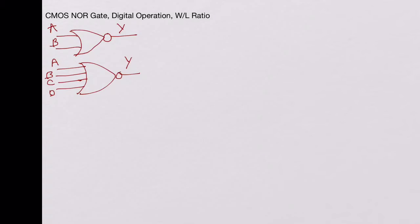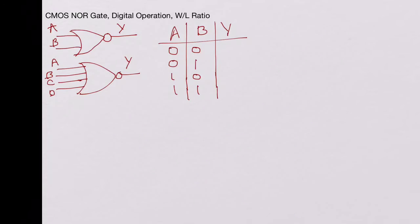Now let's look at the two input NOR gate and write the truth table for this. You'll have A and B and Y for the four different combinations of A and B. Y would be 0 0, 0 1, 1 0, and 1 1, and we will write what the Y is.